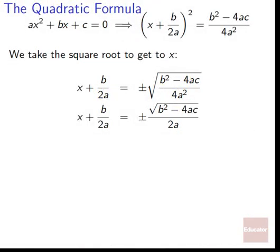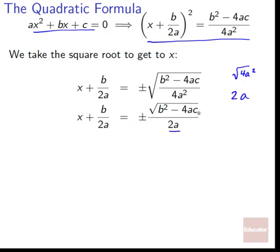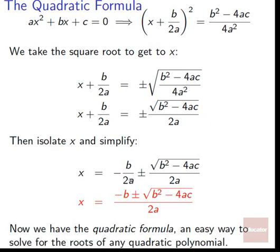We've shown ax² + bx + c = 0 is equivalent to (x + b/(2a))² = (b² − 4ac)/(4a²). Taking the square root of both sides: x + b/(2a) = ±√(b² − 4ac)/(2a), since √(4a²) = 2a. Isolating x by subtracting b/(2a): x = [−b ± √(b² − 4ac)] / (2a). We have the quadratic formula — an easy way to solve for the roots of any quadratic polynomial.